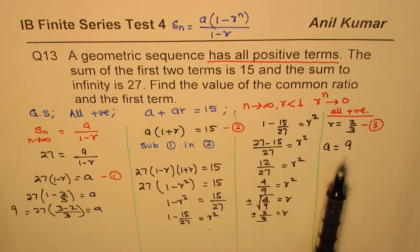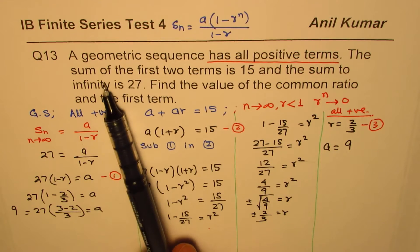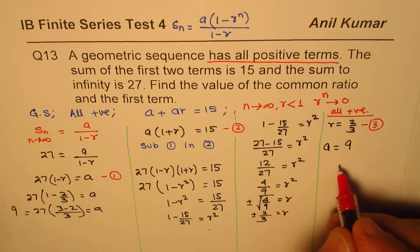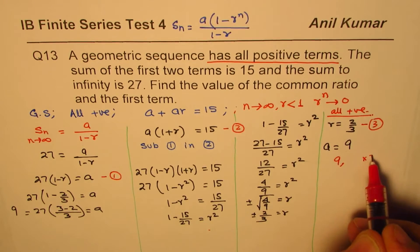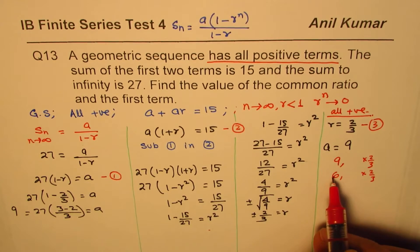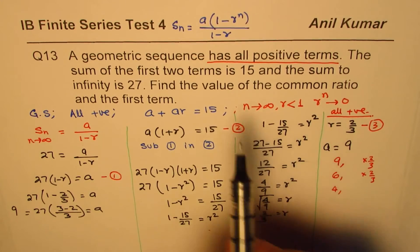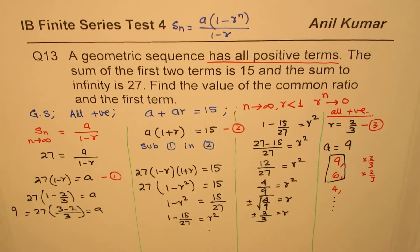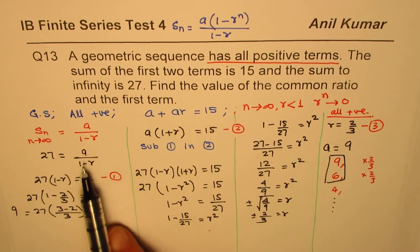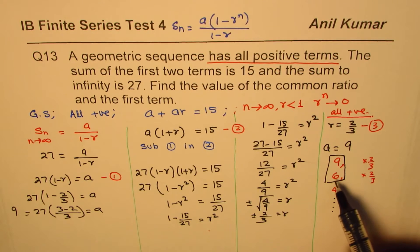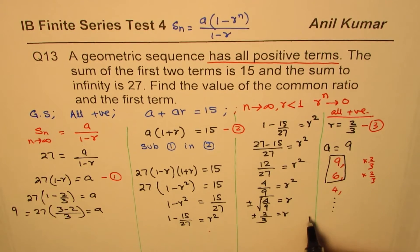Let's verify. Writing out the sequence with r = 2/3 and first term a = 9: the sequence is 9, then 9 times 2/3 = 6, then 6 times 2/3 = 4, and so on. The sum of the first two terms is 9 + 6 = 15. Correct. All terms are positive. The sum to infinity formula was used to set up the equations, so that is also satisfied. Our answer is confirmed.